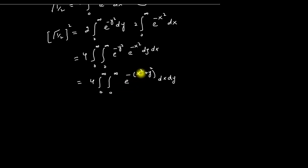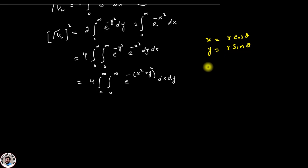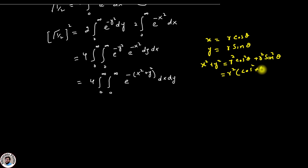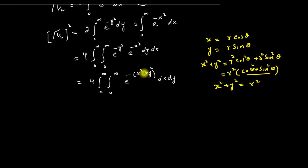Now in this equation we are going to change the coordinates into polar coordinates. We know that for polar coordinates x equals r cos(theta) and y equals r sin(theta). Therefore x squared plus y squared becomes r squared cos squared theta plus r squared sin squared theta, which equals r squared times (cos squared theta plus sin squared theta), and since cos squared theta plus sin squared theta equals 1, we get x squared plus y squared equals r squared.